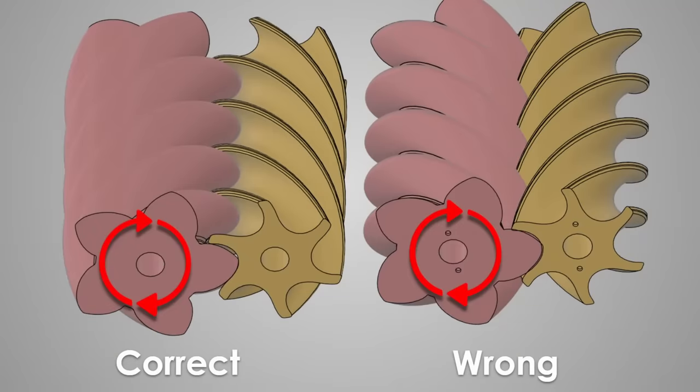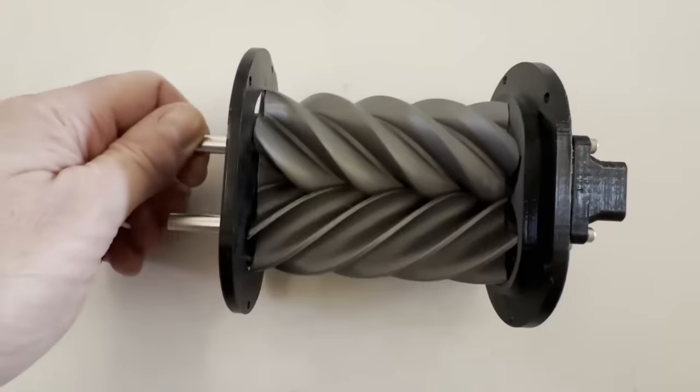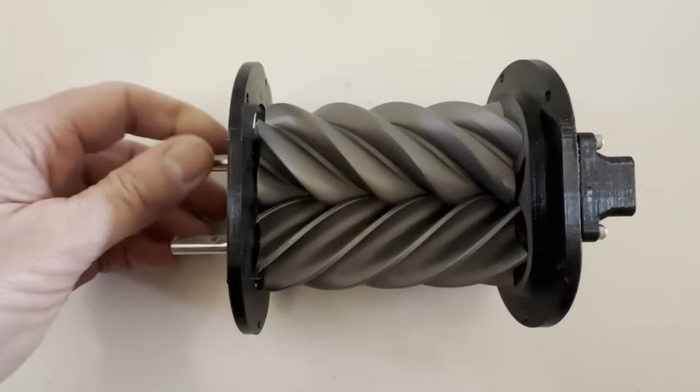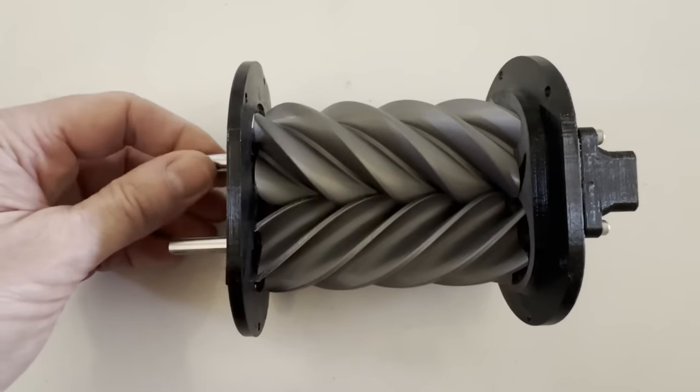But I also had another fatal design flaw in my rotors. I actually had the rotor twist angles backwards. So the compressor would have to run backwards to create any pressure. And these profiles aren't designed to run backwards in any kind of efficient manner.